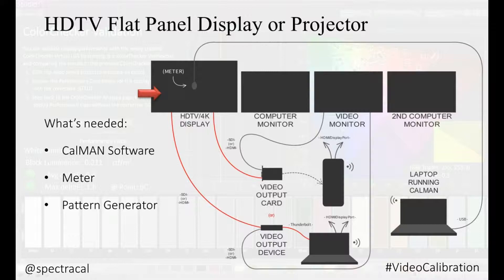In either system configuration — laptop or desktop — for the first pass you'll want to optimize the internal controls of the flat panel or client viewing monitor. This typically involves setting things like brightness, contrast, color temp, color space, aspect ratio, and then balancing the white point with RGB controls.